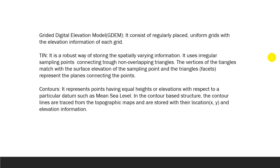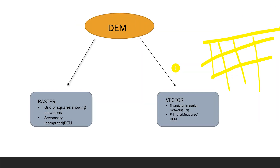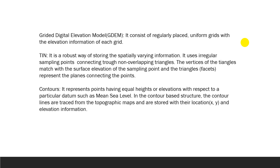The gridded digital elevation model consists of a regularly spaced, uniform grid with elevation information for each grid cell.